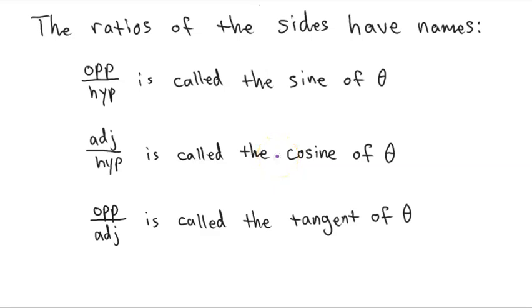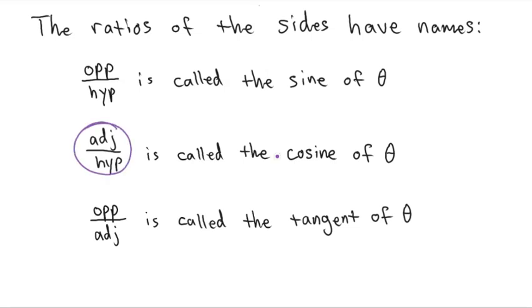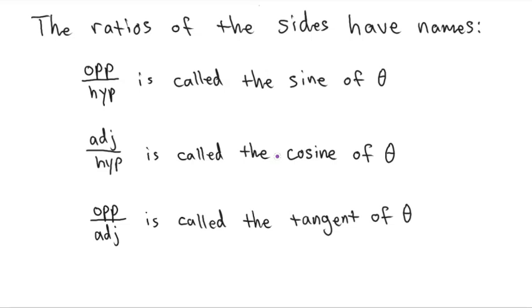These three ratios that we introduced in lesson 7a-3, they actually have names. These ratios of the sides of a right triangle, they have names.